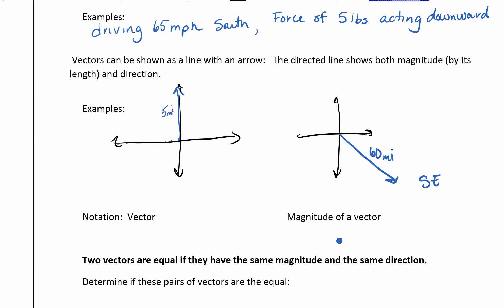So notation: vectors, we either use a bold letter or sometimes you'll see a little arrow above the top of it to let you know that that's a vector. So the magnitude then is going to be the length and we use this kind of double absolute value bar.